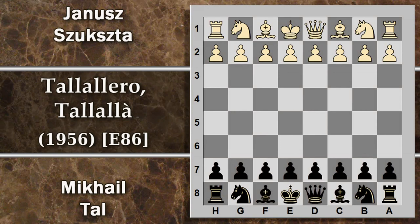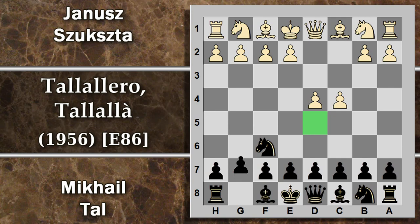In questa partita Zuzza gioca con il bianco e Tal con il nero. D4, cavallo F6, quindi difesa indiana da parte di Tal, C4 va a controllare la casa D5, G6, quindi si prepara per una struttura pseudo est-indiana con questo alfiere che potrà andare in fianchetto. Cavallo C3, mossa normale, per aumentare la pressione sul centro.